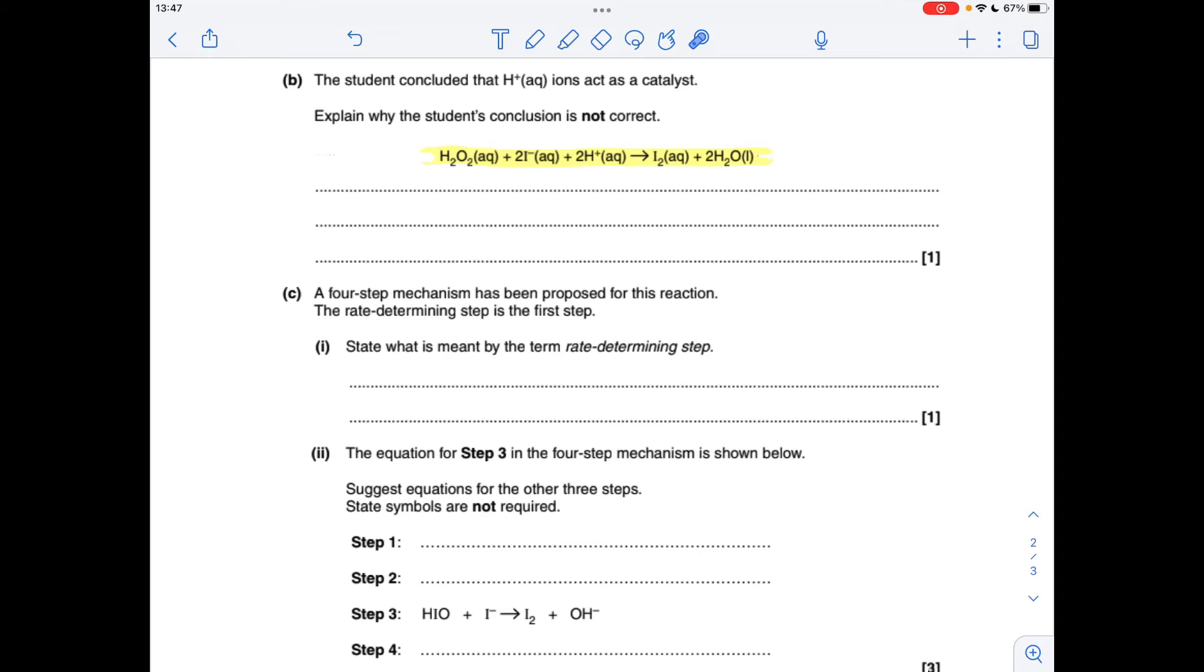Part B, the students concluded that the H+ ions are acting as a catalyst. Why is it not correct? Well, you can see the H+ ions are being used up in the overall reaction equation. So it can't be a catalyst as it's not being reformed.